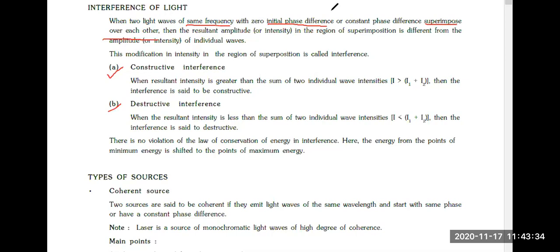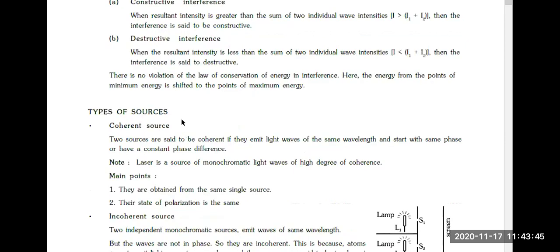When you talk about the source, it should have the same frequency. By same frequency, I mean they should be coherent. What's the meaning of coherent source? It means they will have the same wavelength, same frequency, and same phase or constant phase difference. These are the initial conditions. I'm talking about the initial phase difference.